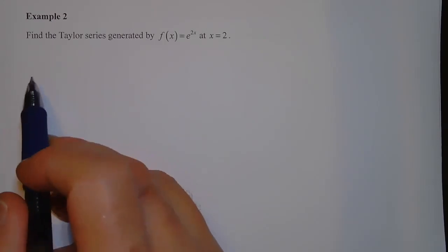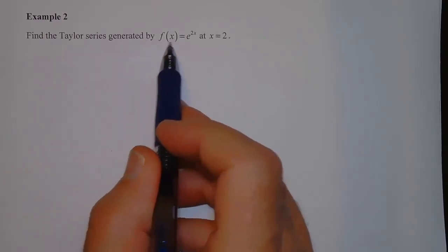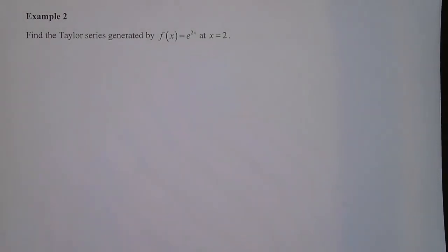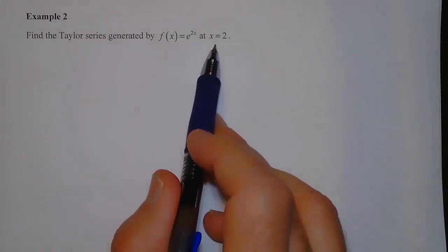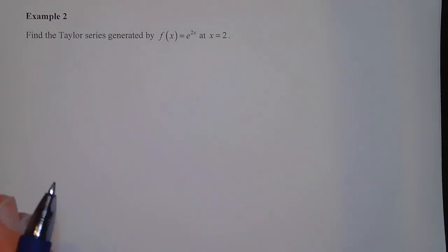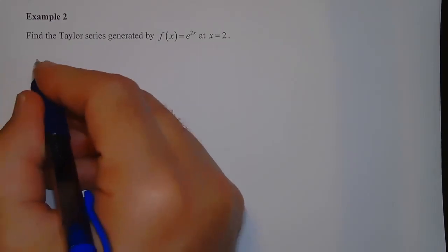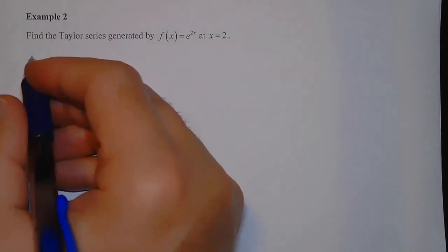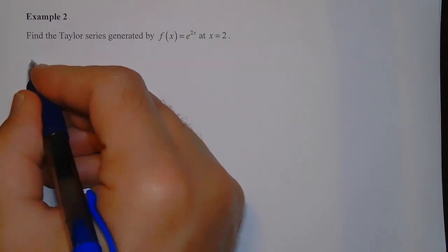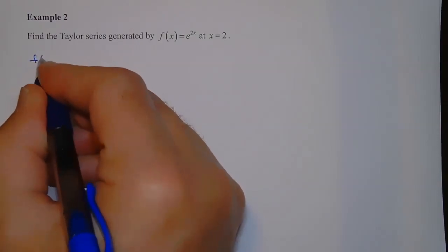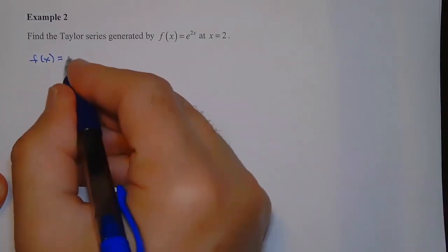For example two, we want to find the Taylor series generated by f(x) = e^(2x) at x equals 2. We can't use the chart from the last lesson since that was centered at x equals zero. We'll have to compute all the derivatives, look for an nth derivative pattern, and build the series centered at x equals 2.